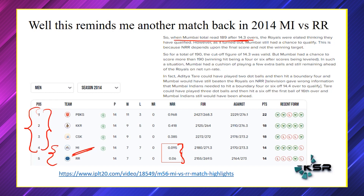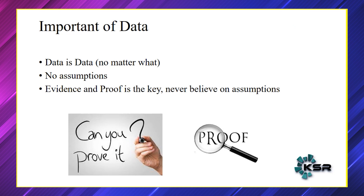Forget about the match — what really matters is data. The lesson learned is: no matter what, data is always data. Never go with assumptions. When they said the team had to score in 14.3 or 37.1 overs, that was just an assumption. If you do all the permutations, combinations, and mathematical calculations, there was still a chance. Always when working with data, evidence and proof are key — never go with assumptions.